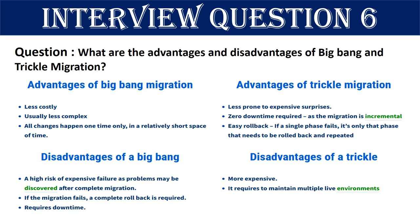Advantages of big bang migration: less costly, usually less complex, and all changes happen one time only in a relatively short space of time. Advantages of trickle migration: less prone to expensive surprises, zero downtime required as the migration is incremental, and easy rollback — if a single phase fails, only that phase needs to be rolled back and repeated.